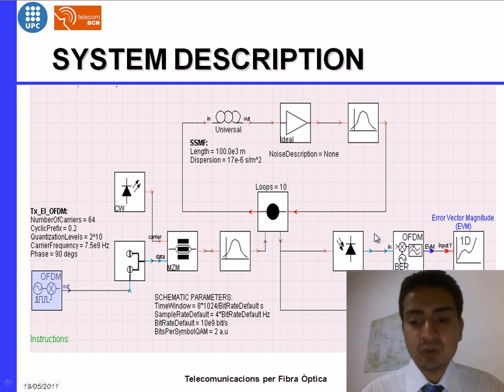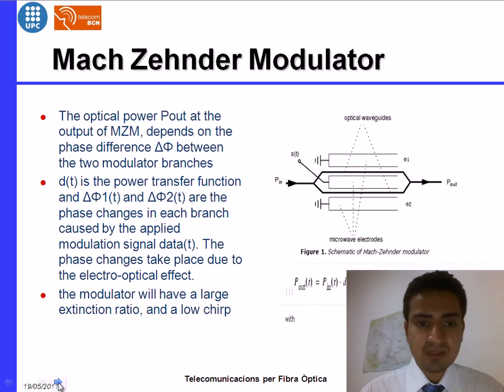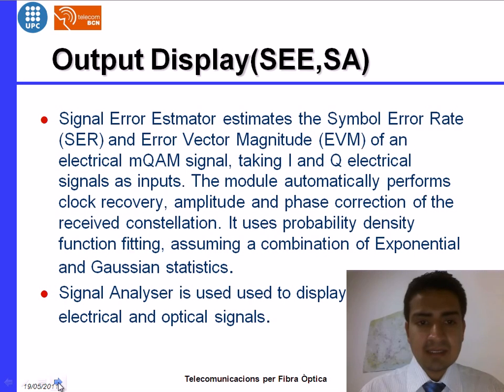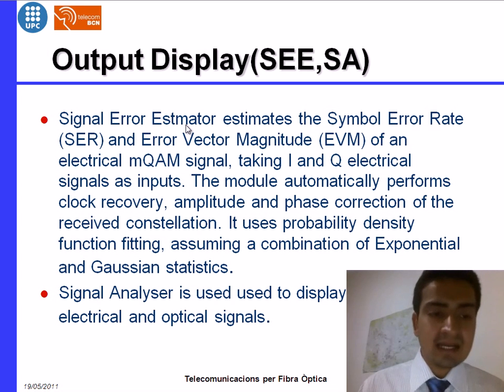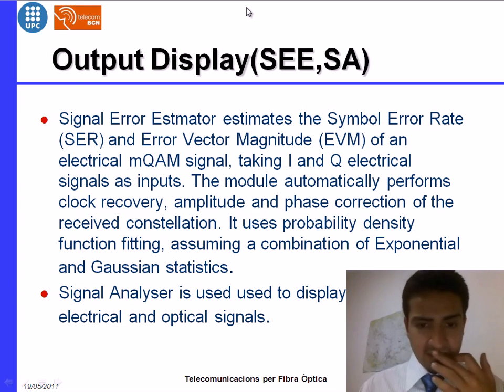So at the receiver we have photo detector. This photo detector can convert this optical signal back into electrical signal and then at the receiver we have decoded the whole data which we coded at the transmitter. Here we can display the SEE that is signal error estimator. We can estimate the signal error estimation with the help of signal error estimator. Here we can calculate the SER that is symbol error rate and we also calculate the error vector magnitude.